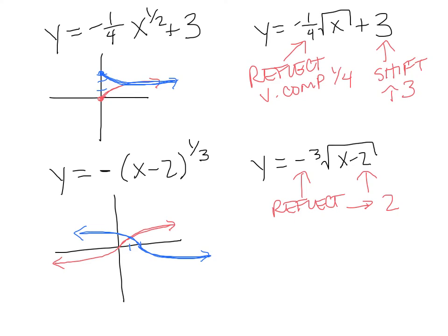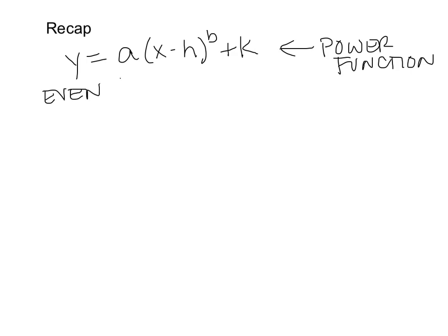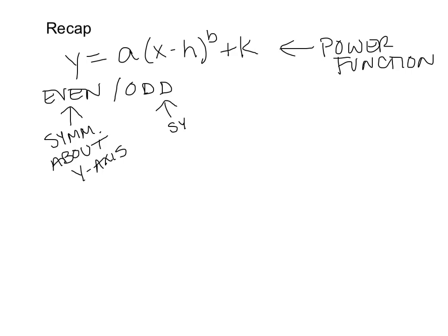That's it for power functions — let's do a recap. A power function is anything in the form y = a(x - h)^b + k. Even power functions are symmetric about the y-axis — you can fold them in half. Odd power functions are symmetric about the origin, meaning you can rotate them and the parts match up.